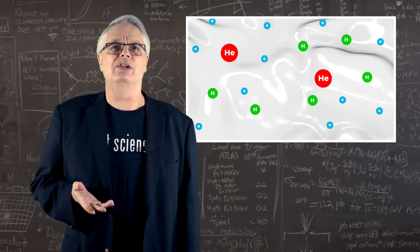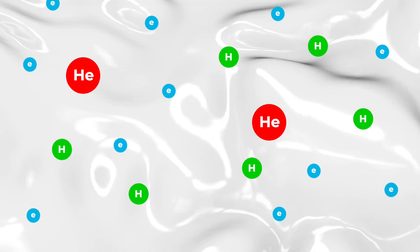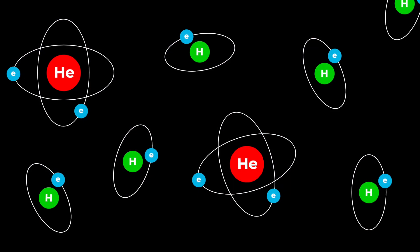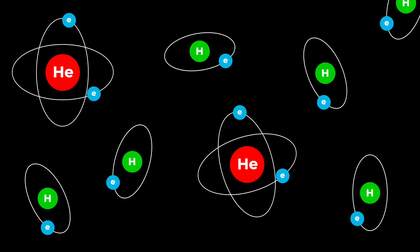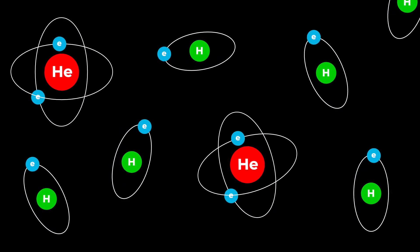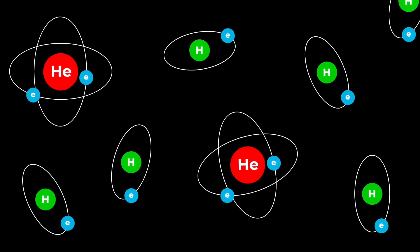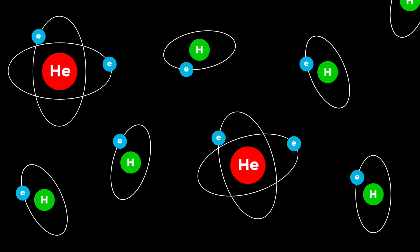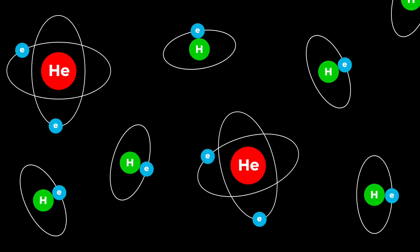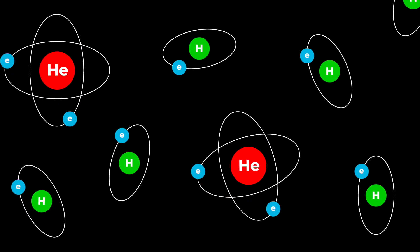Then, at about 380,000 years after the Big Bang, the universe cooled to about 3,000 Kelvin or about 5,400 degrees Fahrenheit, and everything changed. At that temperature, the universe was cool enough that once electrons encountered a proton, they would be trapped, forming a hydrogen atom.